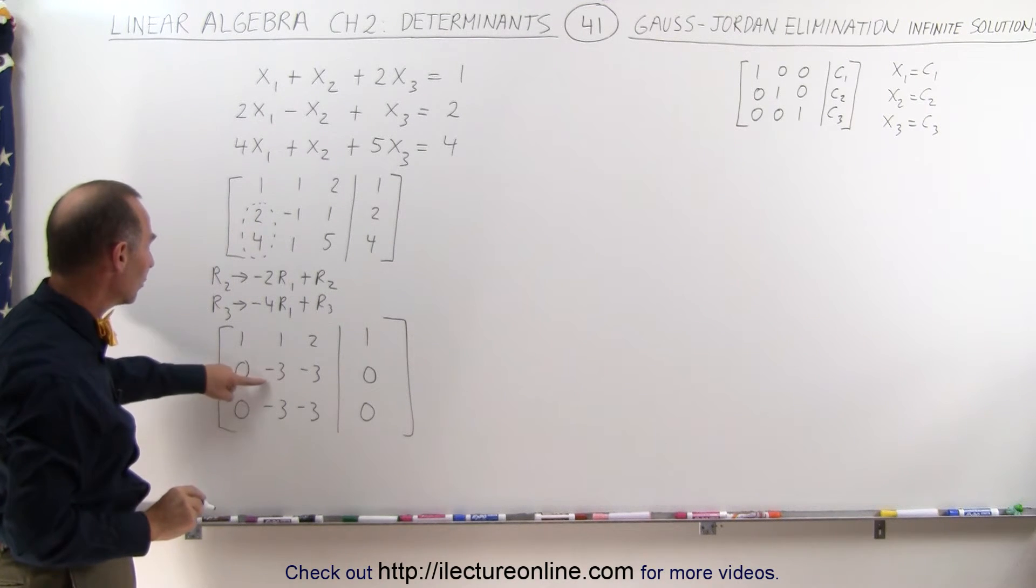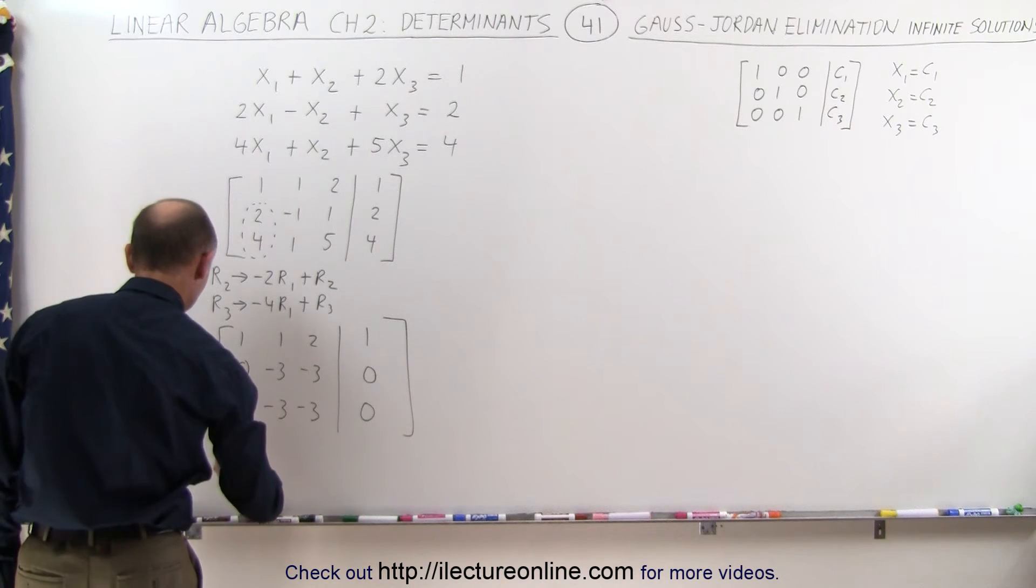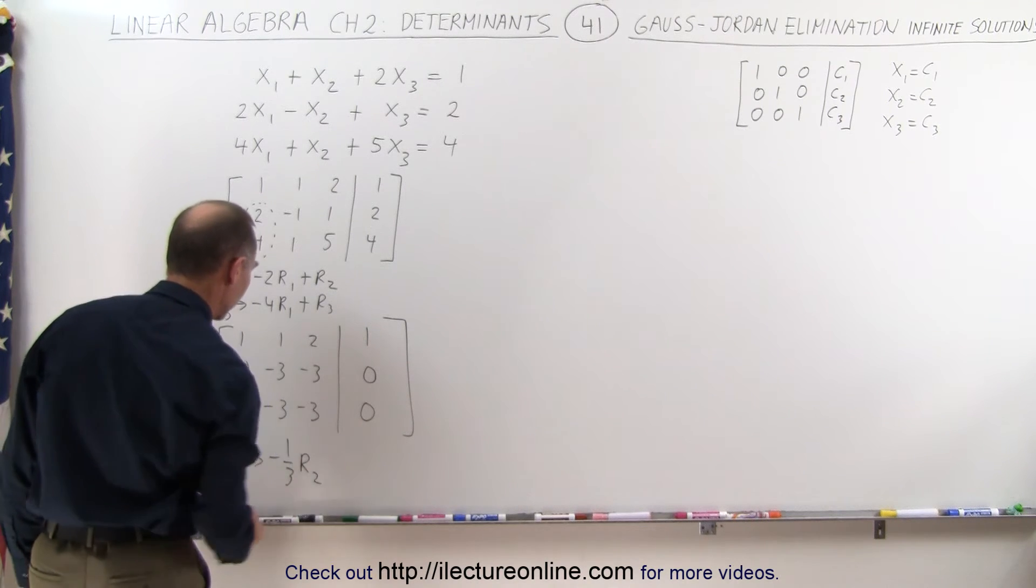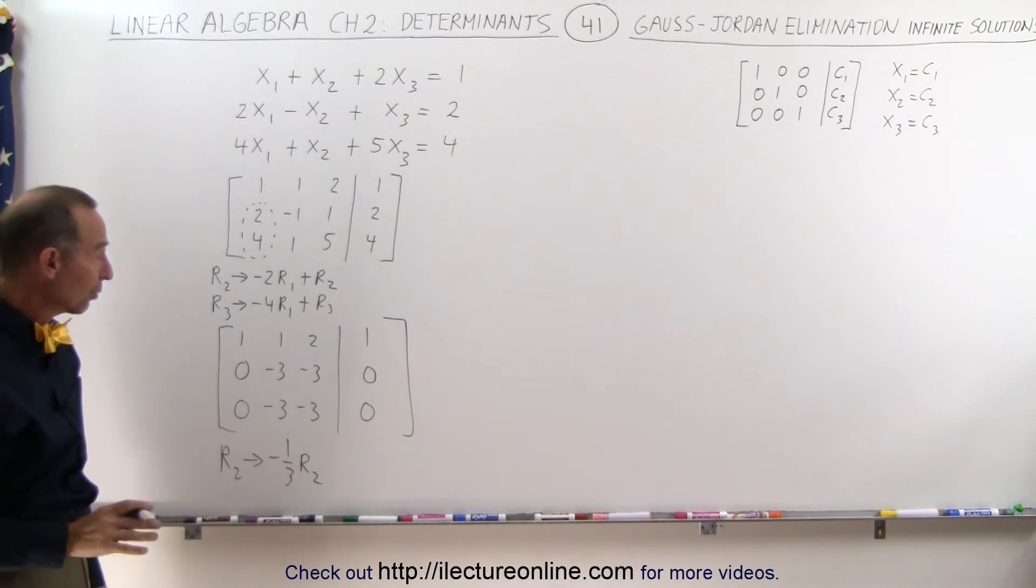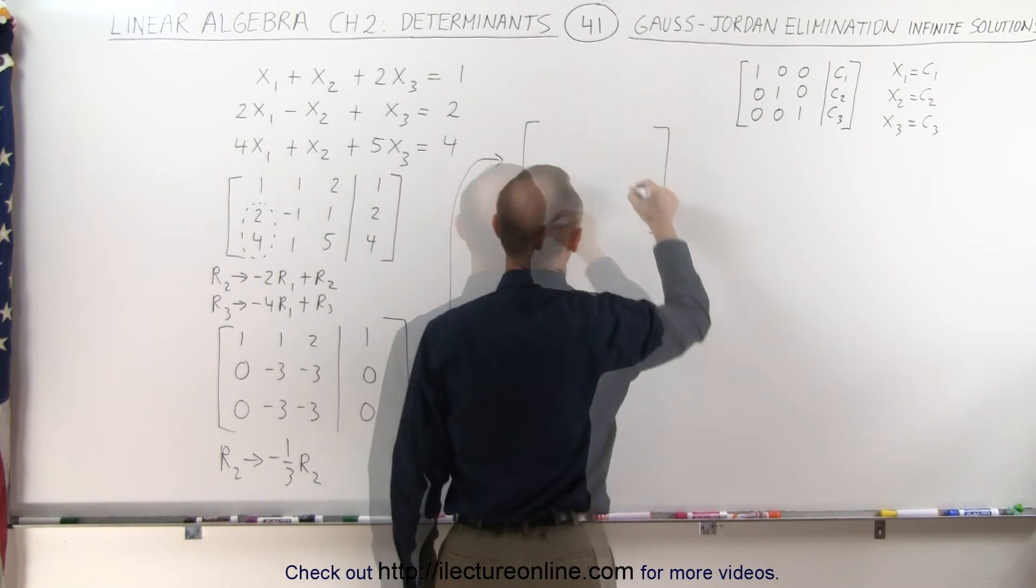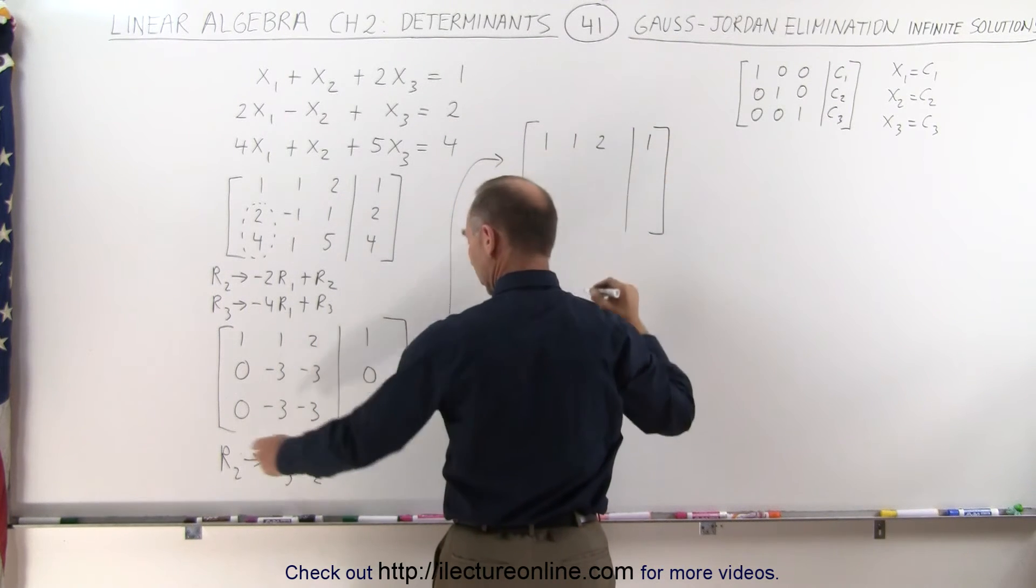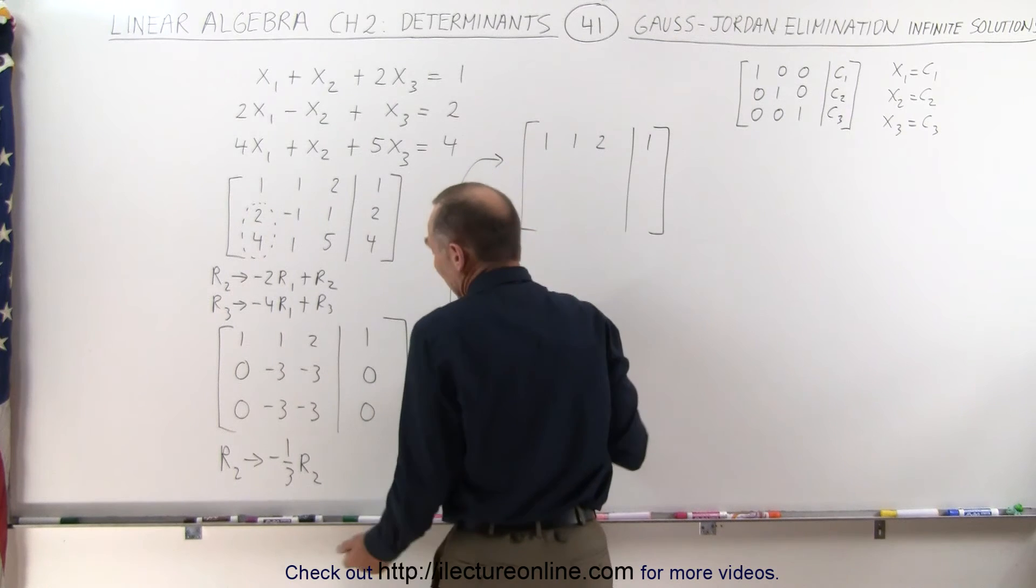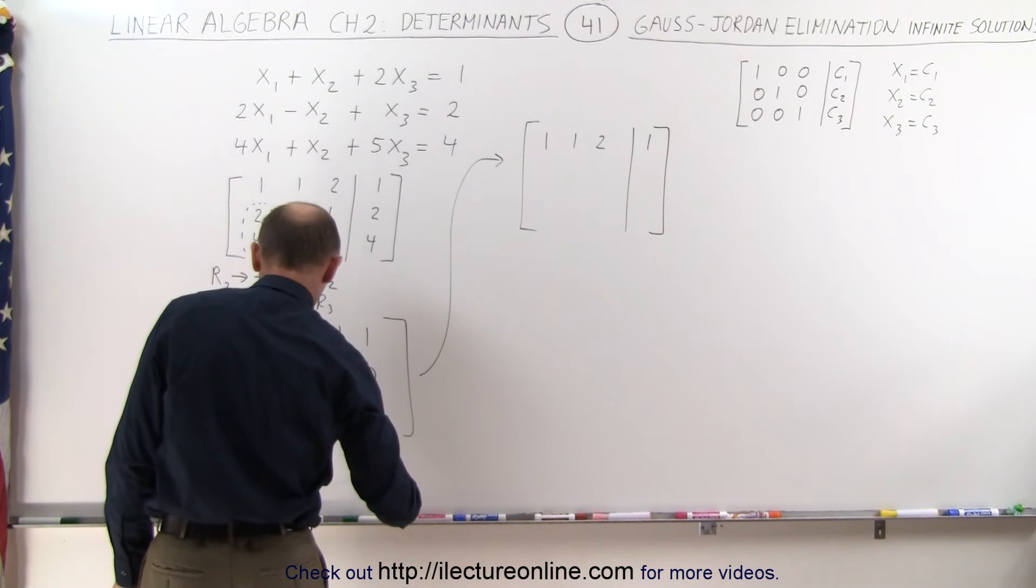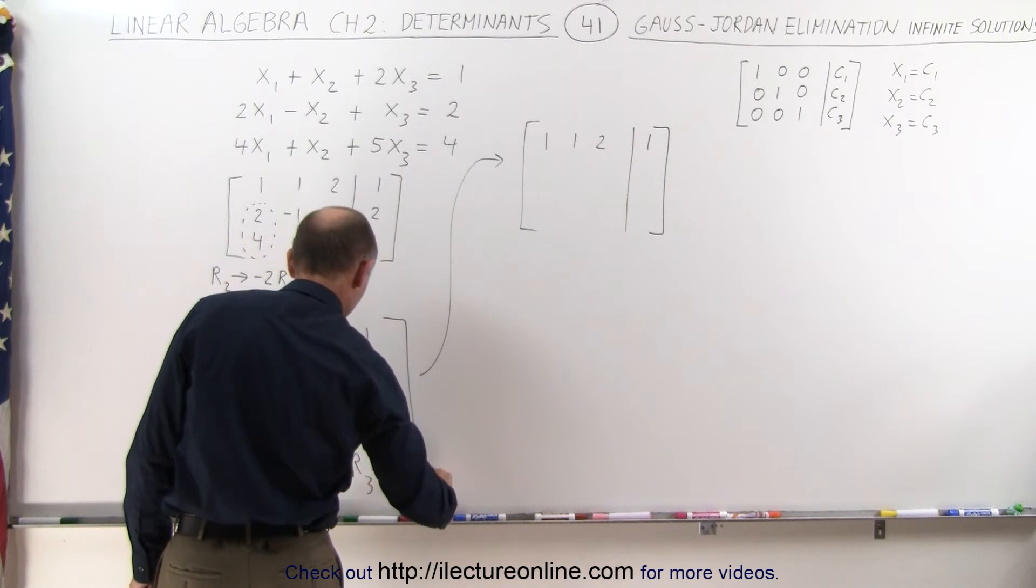First of all, we're going to take the second row and turn this into a 1, which means we're going to divide the second row. R2 is going to become minus 1 third times R2. Simply divide the second row by negative 3. When we do that, the second row becomes this. The first row doesn't change: 1, 1, 2, and 1. The third row doesn't change. Or actually, you know, what I could do is I can change both of them if you want. You could say, okay, that makes it a little bit easier. R3 can become negative 1 third times R3.